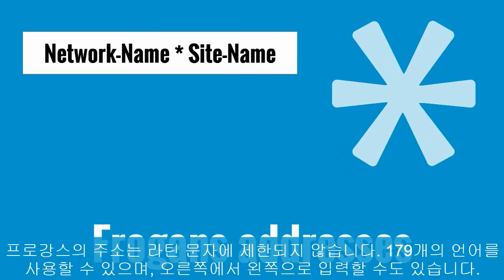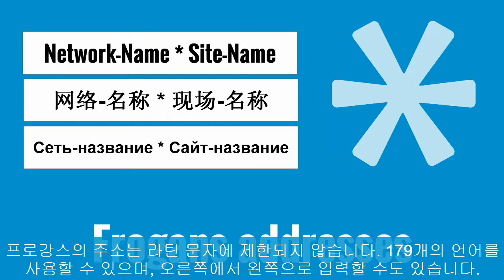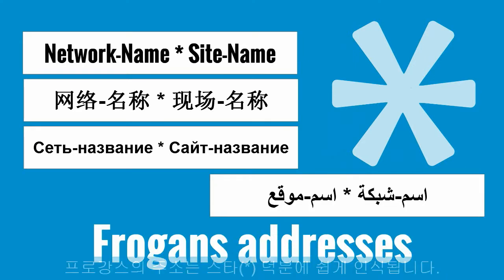Fogans addresses aren't limited to Latin characters. They can be in 179 languages, and they can even be written from right to left. Fogans addresses are easily recognizable, thanks to the star.